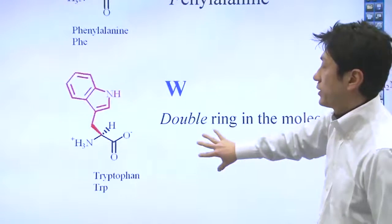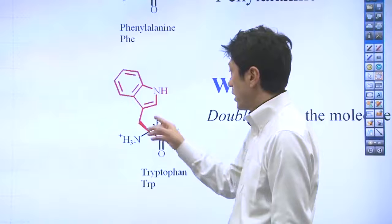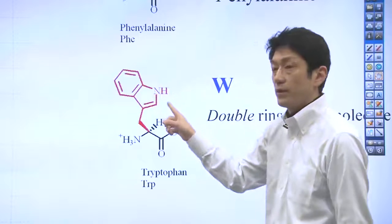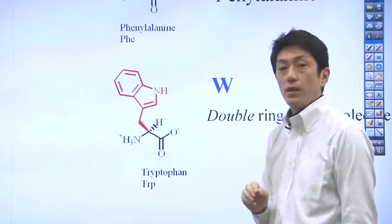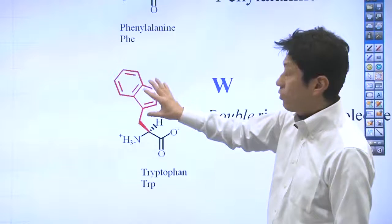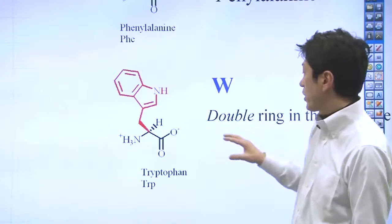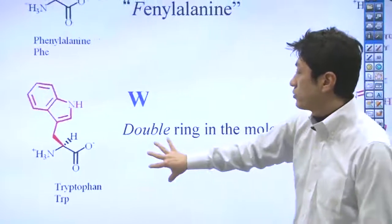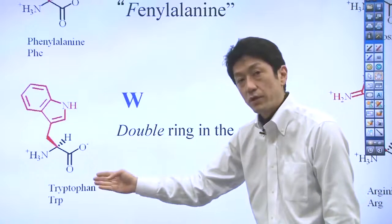Tryptophan is slightly different. Tryptophan has an indole structure right here. The two ring structures fused to each other. This is the only amino acid that has a double ring structure. That's why we can use W. We cannot use T. We use T for threonine.